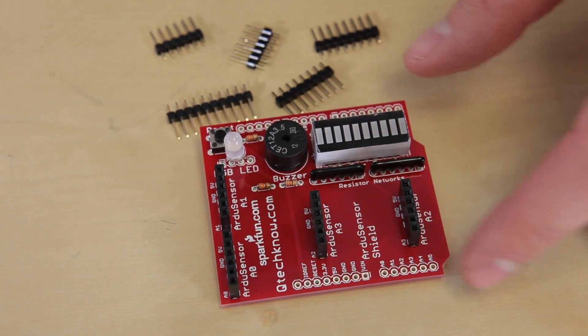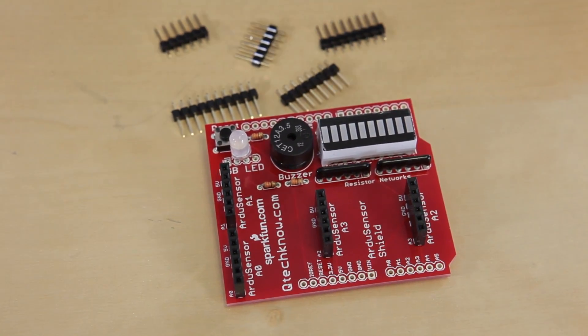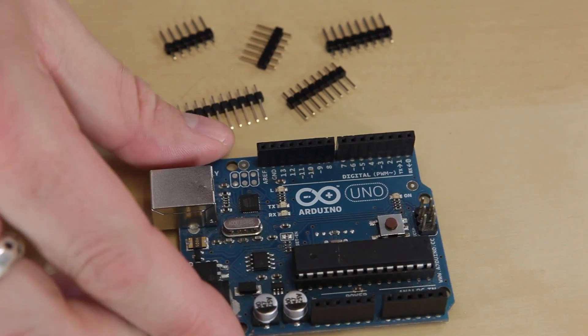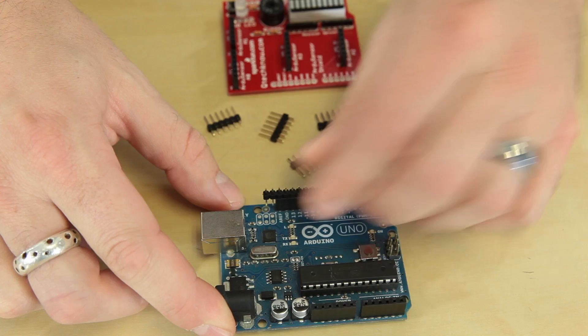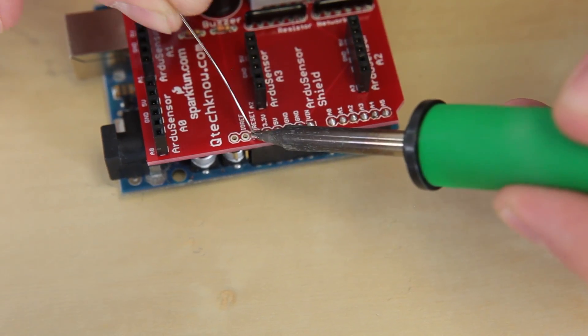Next we need to install all these headers onto the board. The easiest way to do this is to actually use an Arduino and just pop the headers into the Arduino, set the shield on top, and just solder it from the top.